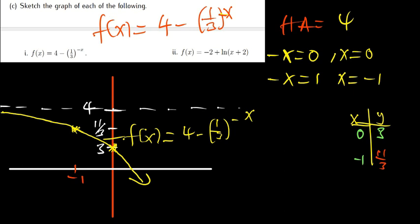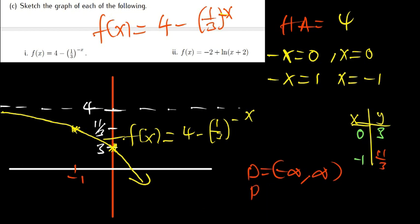The domain of exponential is always from negative infinity to positive infinity — we can see the graph doesn't have a defined start or end point. But the range is restricted. In this case the range starts from y = 4 (not included) all the way going down to negative infinity, since the graph approaches but never reaches the asymptote at y = 4.